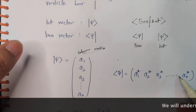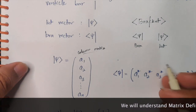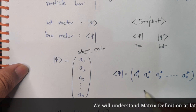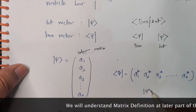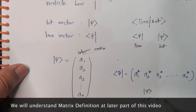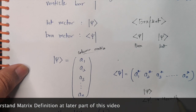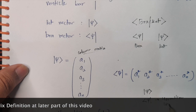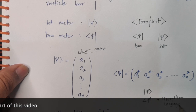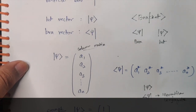And you also have to take the conjugate of that. So to summarize: if you have a particular ket vector, a bra vector is actually its Hermitian conjugate. Now what is Hermitian conjugate? It is the Hermitian conjugate of your ket vector.